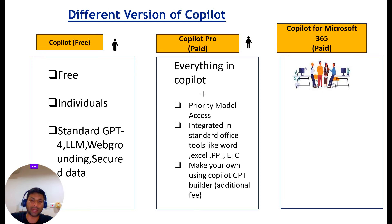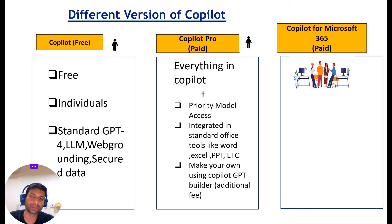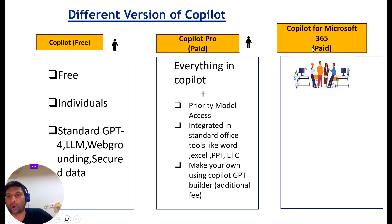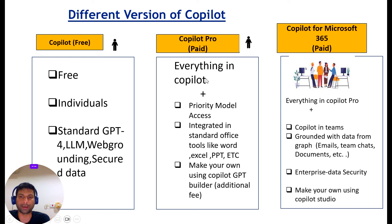Another feature is that you can make your own Copilot using the Copilot GPT builder. One more thing: Copilot Pro is for individuals — it's for home use, not for business purposes. And here comes the third one, which is Copilot for Microsoft 365, which is very expensive and is for business purposes. Here you get everything that Copilot Pro provides.